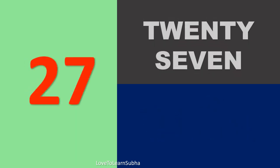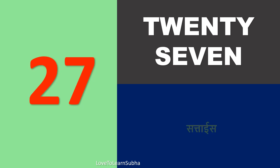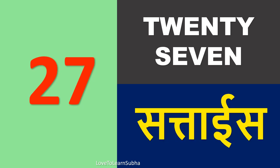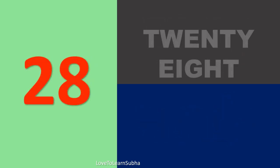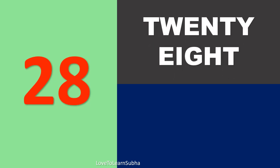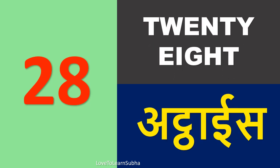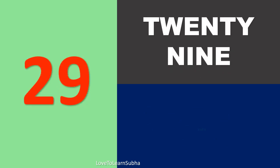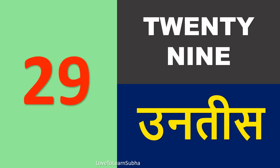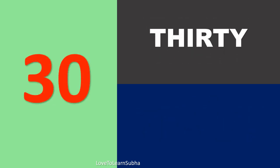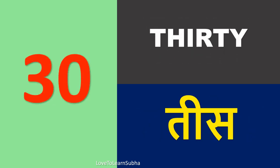27 – Satais, 28 – Athais, 29 – Untis, 30 – Tis.